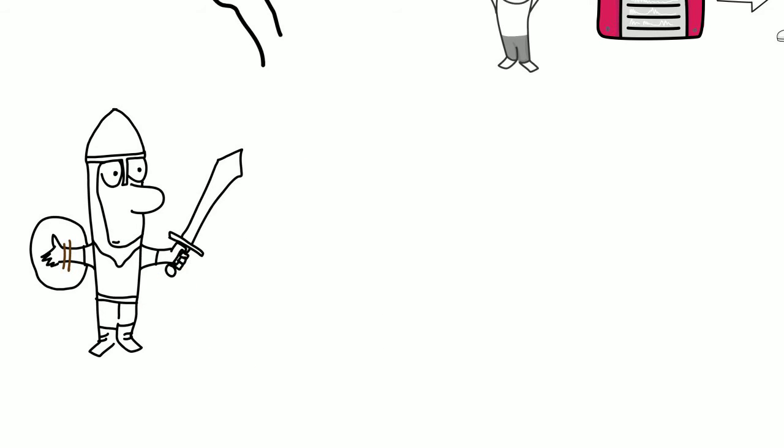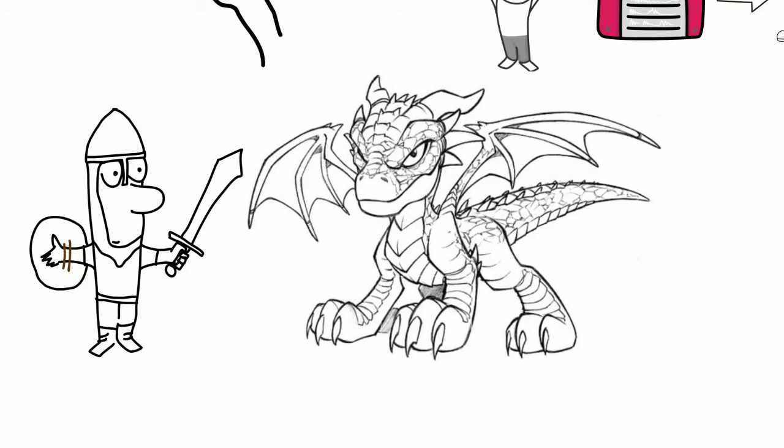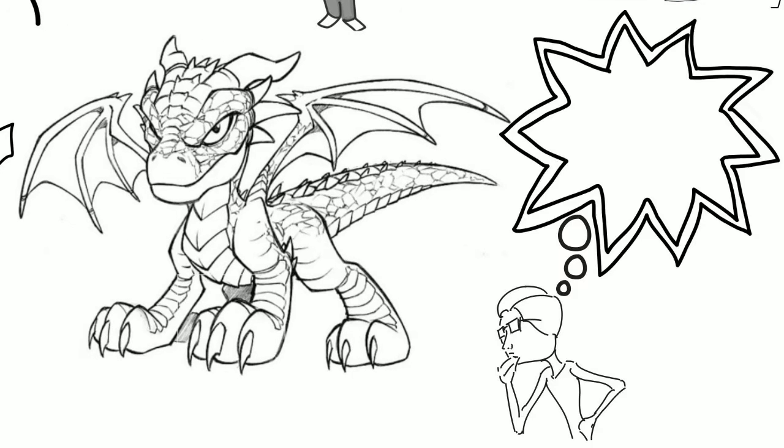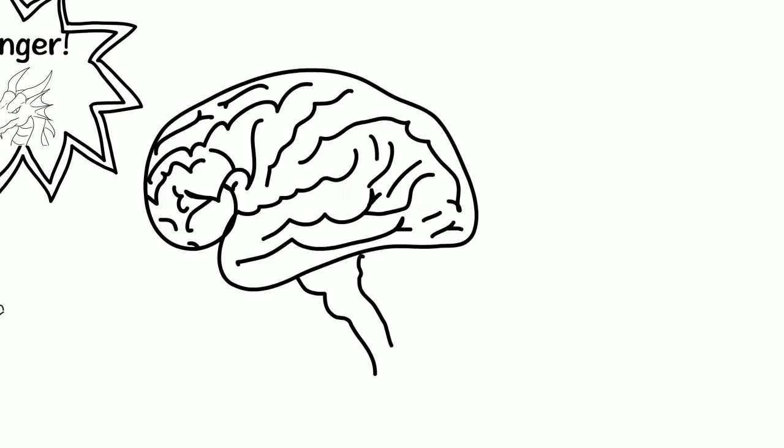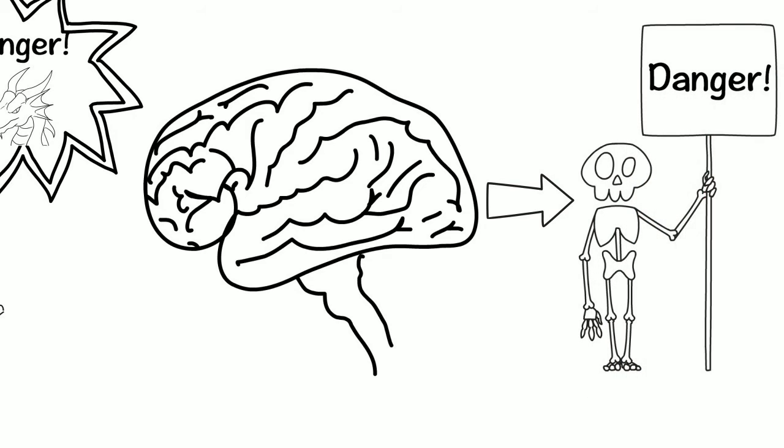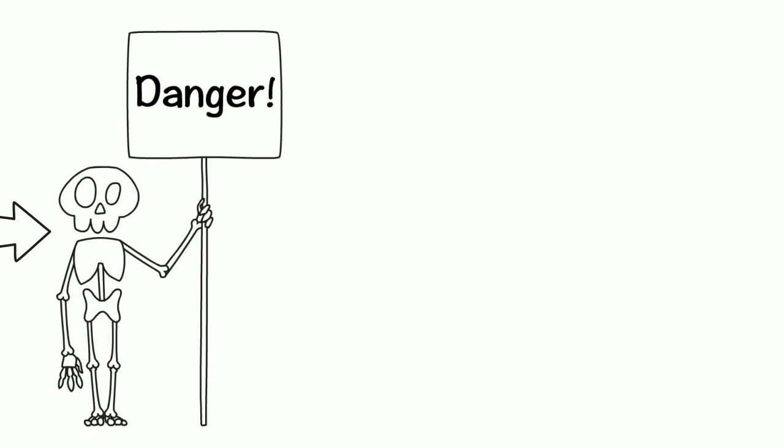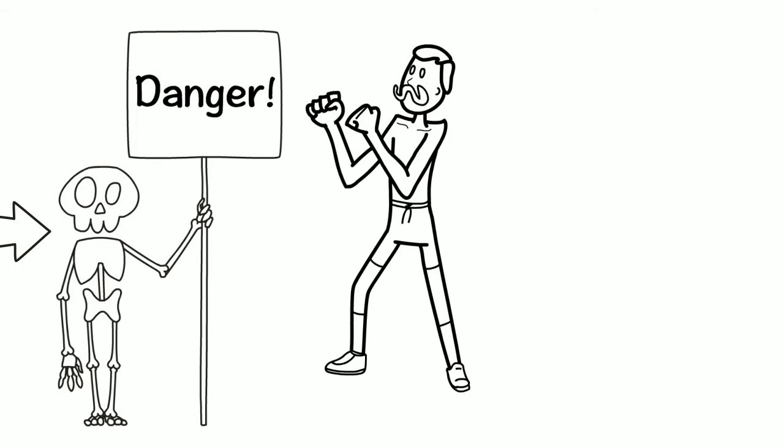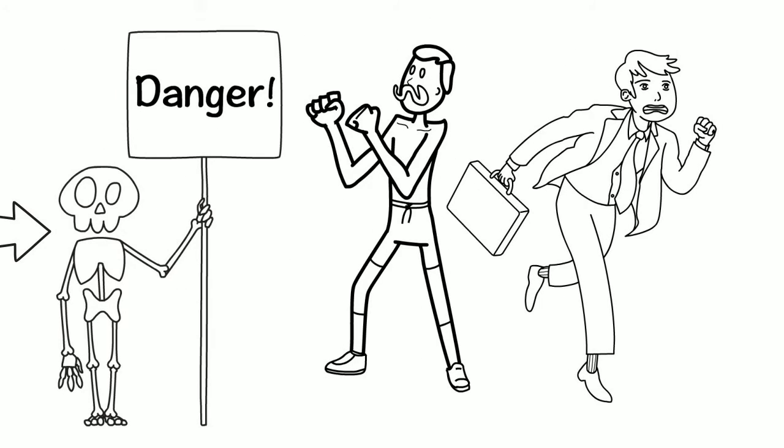Now, the body is naturally programmed to protect itself from harm or destruction. So, if you think I'm in danger, the brain will receive that thought in the form of a danger signal and automatically begins producing chemicals in your body to prepare you for fight or flight.